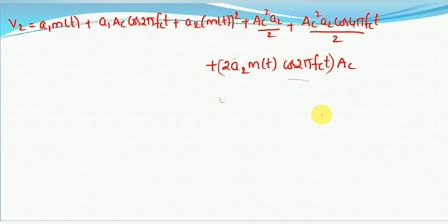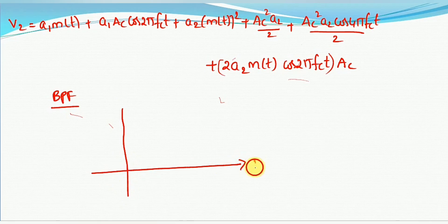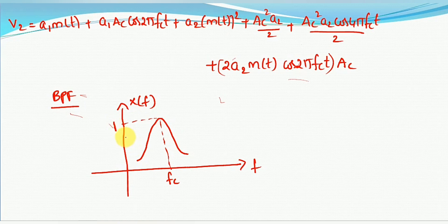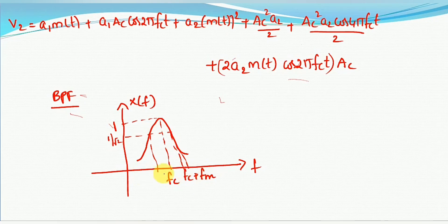Now let us see how the response of the band pass filter looks. The frequency spectrum of the band pass filter has a center frequency fc — the carrier frequency — with a gain of 1, and 3dB frequencies at fc + fm and fc − fm. The filter allows frequencies in the band around fc and rejects all others.